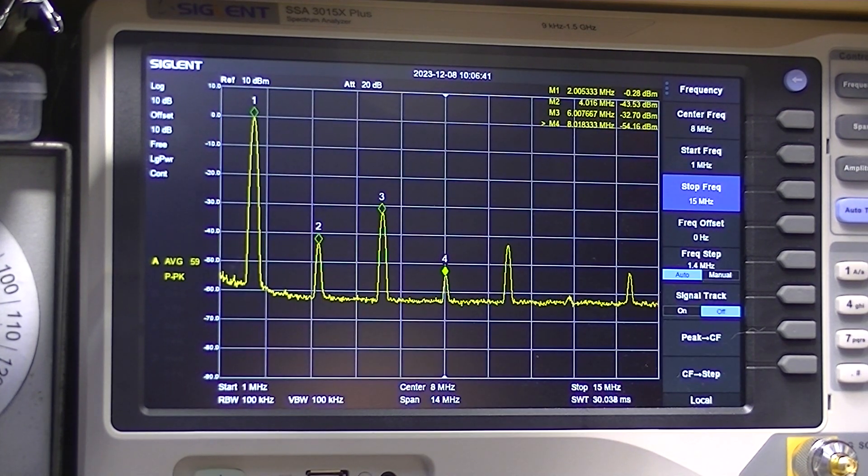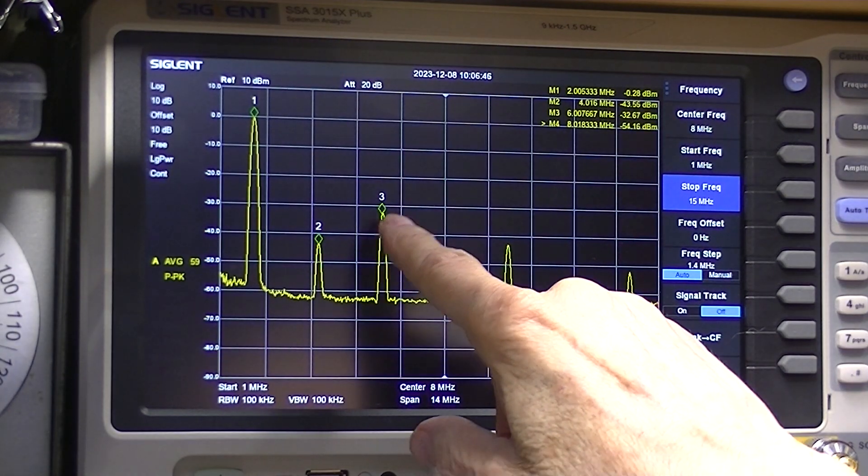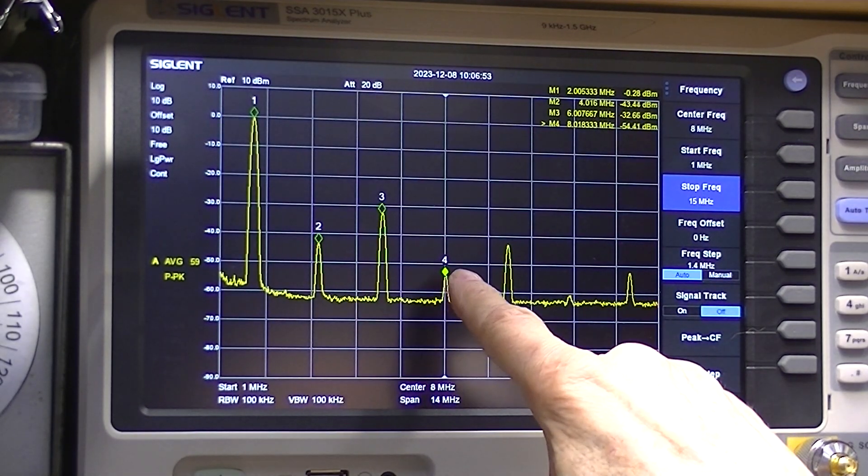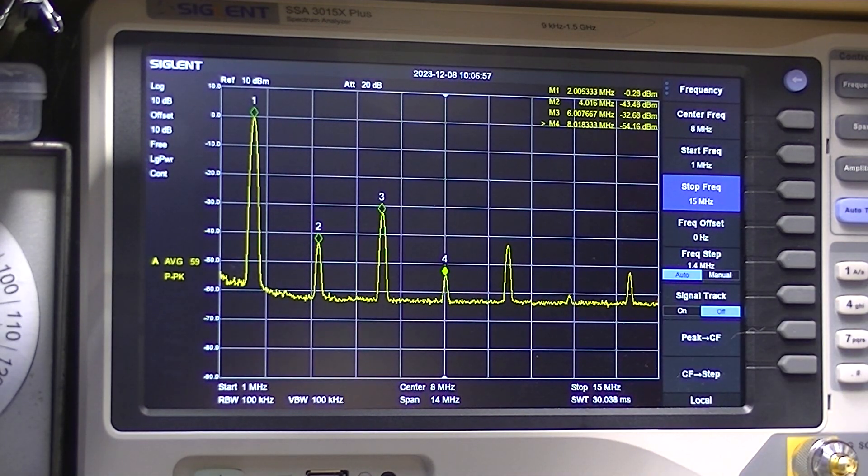Here we're set up at 2 megahertz. You can see the 3rd harmonic is still down 30 dB. Everything else is down 40, 54. So spectral purity on the thing is pretty good. And that's a relationship of harmonic distortion. We'll take a look at the oscilloscope one time.